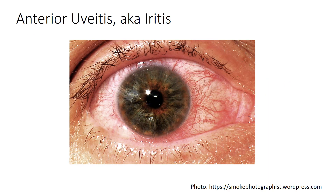Another cause of red eye from the anterior chamber is iritis, also called anterior uveitis. The exact etiology is unknown, but one theory postulates that exposure of an individual with a genetic predisposition to an infectious agent later results in cross-reactivity with ocular-specific antigens — a form of molecular mimicry. The immune system thinks the eye antigens are a foreign viral or bacterial invader it previously encountered. Iritis leads to release of inflammatory factors within the anterior chamber, causing vasodilation of the vessels nearest the iris, which are at the limbus. When these blood vessels dilate, this is called limbal flush.